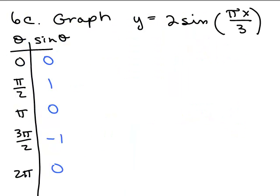We're on 6C. We're going to graph y equals 2 sine pi x over 3. So let's do the amplitude first. The amplitude is the absolute value of the coefficient of sine, so it's 2, that's the absolute value of 2.